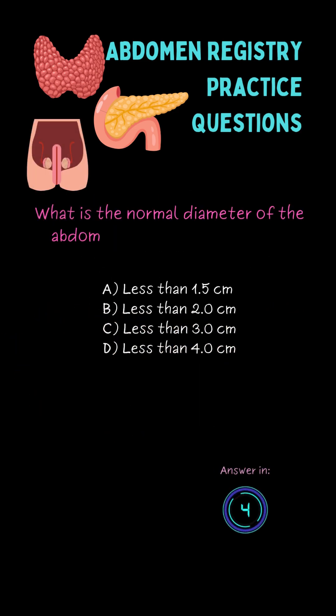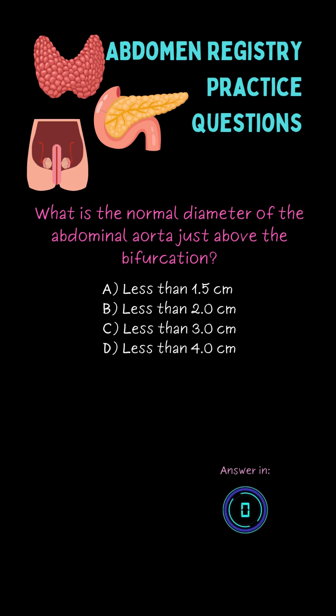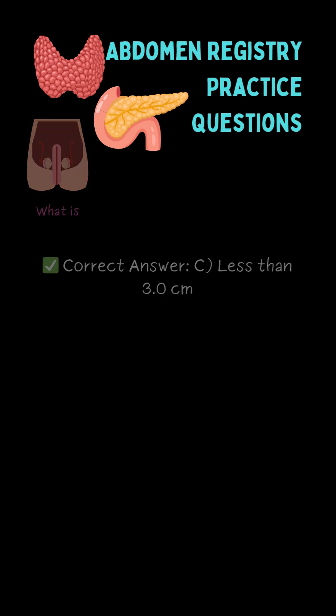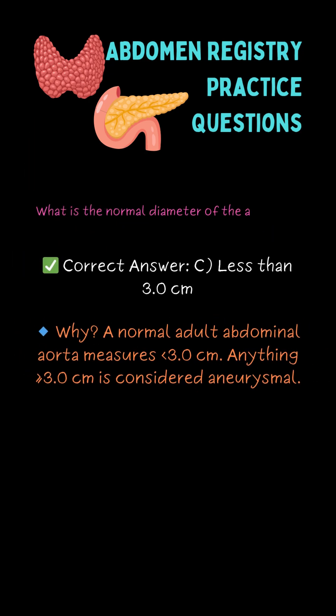What is the normal diameter of the abdominal aorta just above the bifurcation? C. Less than 3 cm.